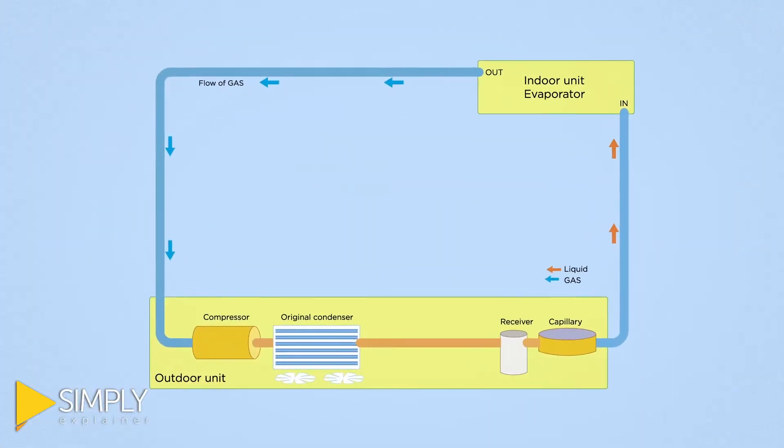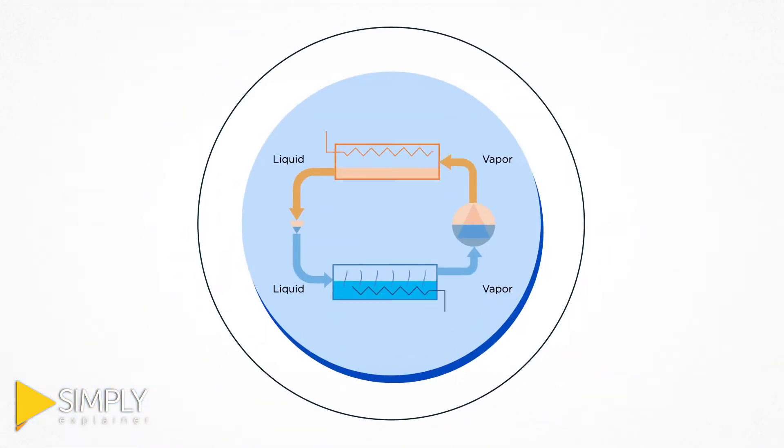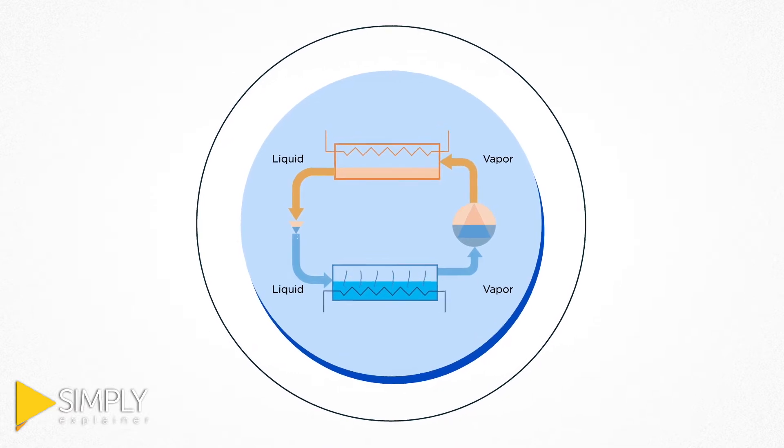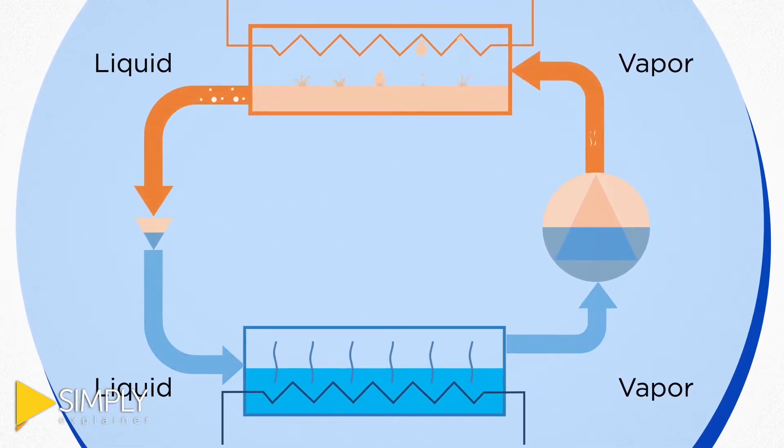First, let's take a look at how your HVAC works. Refrigerant is circulated throughout your system, from liquid to vapor, then back to liquid, and so on.